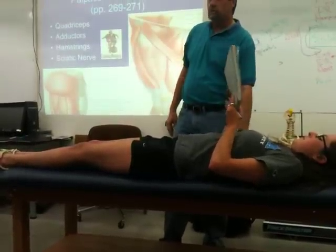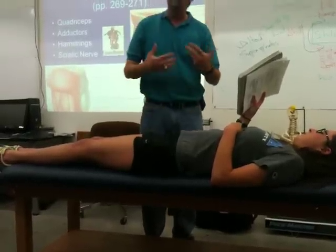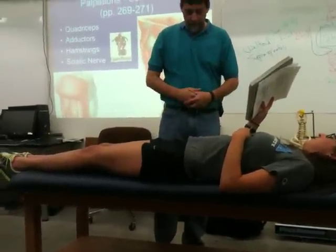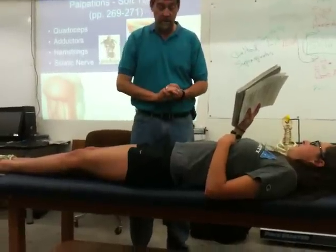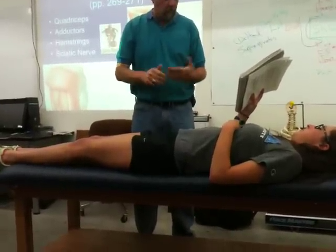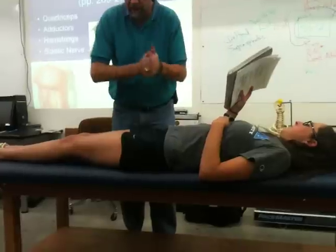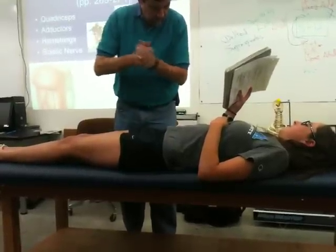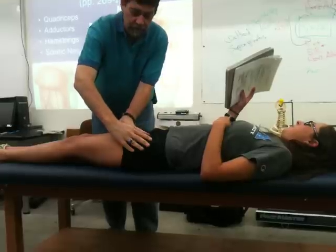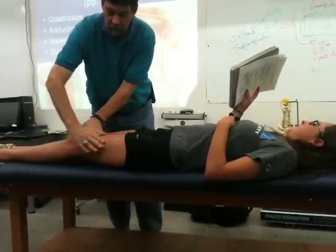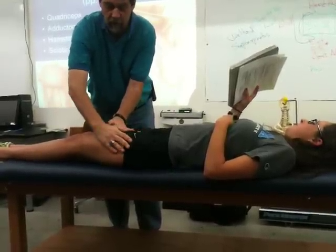For soft tissue, we've got our quadriceps — we're looking for muscle pulls, and in this case, myositis ossificans, a special condition we're worried about here. We're looking for pulls or contusions. In general, I do two hands down because we've got the four different quadriceps.